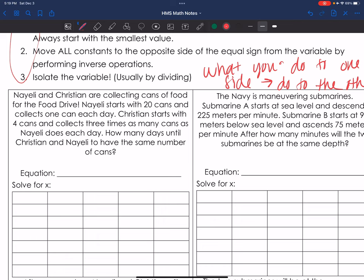Nayeli and Christian are collecting cans of food for the food drive. Nayeli starts with 20 cans. I know that's my constant, right? She starts with 20. I'm going to put Nayeli on this side, and I'm going to put Christian on this side. And collects one can each day. So one x, right? Because it's each day. One can each day.